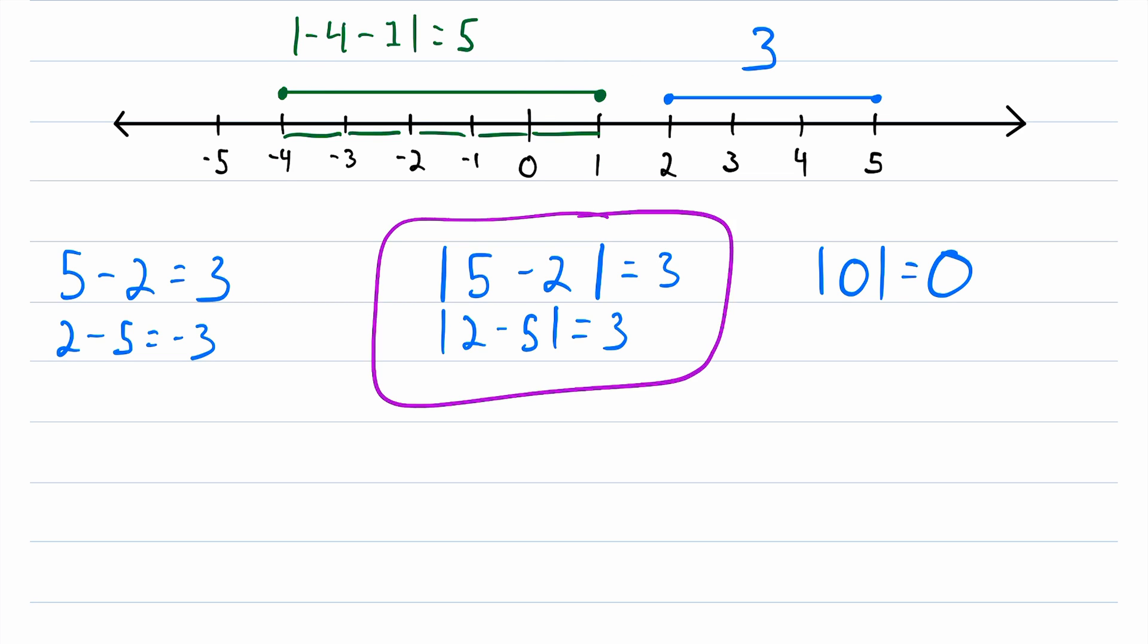So you can see the absolute value is pretty useful. It's a very nifty thing. So remember, the absolute value of a positive quantity is a positive quantity, like the absolute value of positive 2 is equal to positive 2. The absolute value of 0 is equal to 0. The absolute value of a negative number is also a positive number, like the absolute value of negative 3 is equal to positive 3.